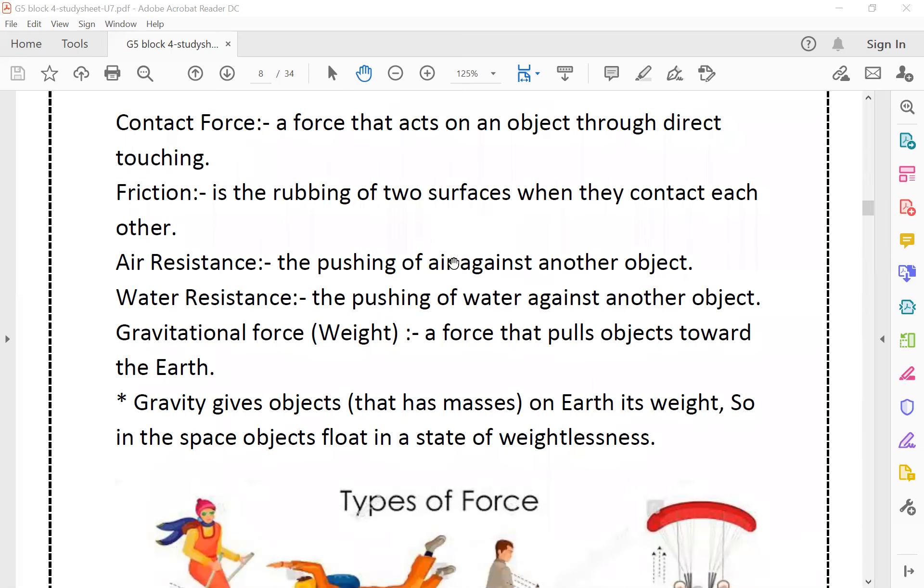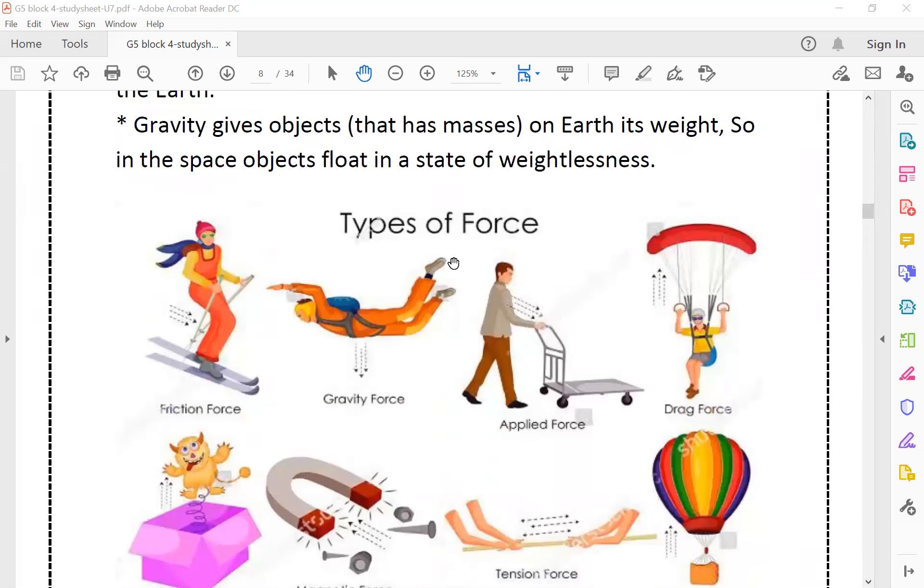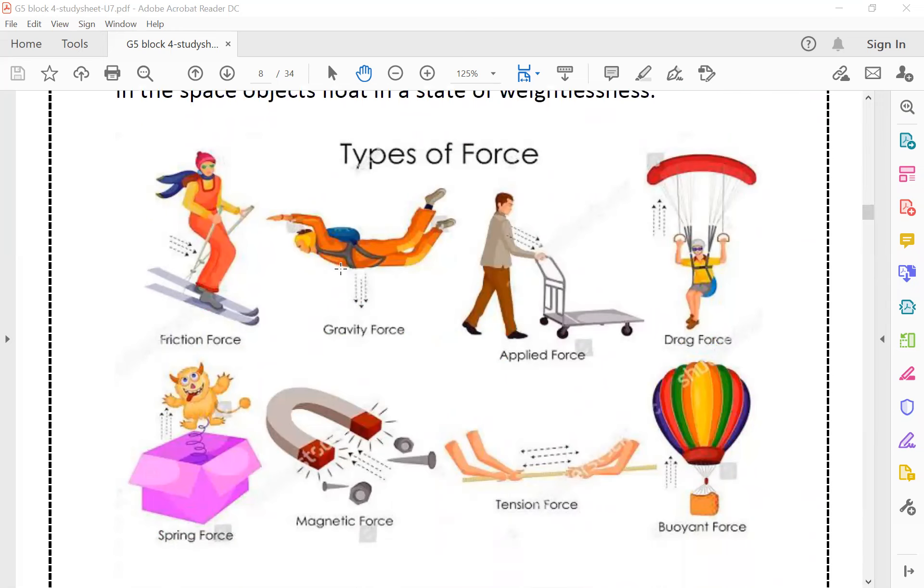In this picture, we have different types of force, like the friction force, gravity, applied force from this person, a pushing force from this person on this car, the drag force, the tension force when you pull the rope, the magnetic force, and the spring force inside the spring.